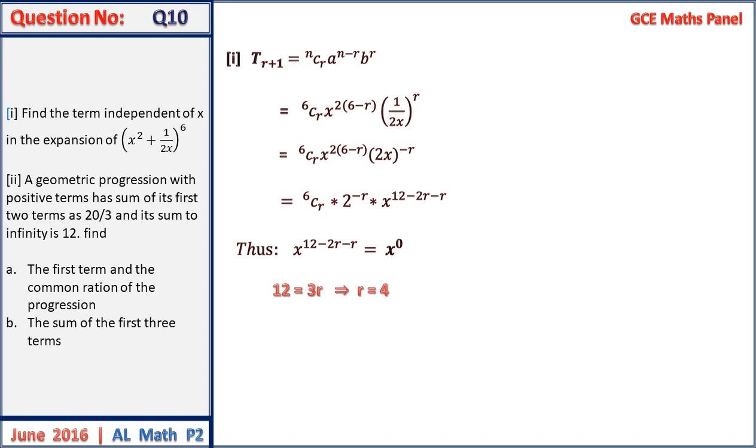Therefore our term independent of X, when we put into what we have in the first step, will actually be the fifth term, that is the r plus 1 term. This term independent of X will have a value of 6 combination 4 times 2 to the power minus 4, giving us the value of 5 on 4. That is the term independent of X.